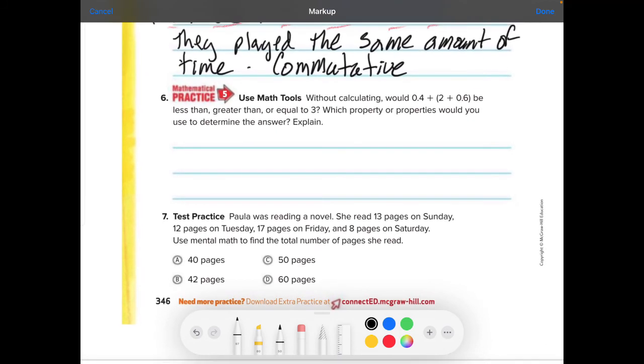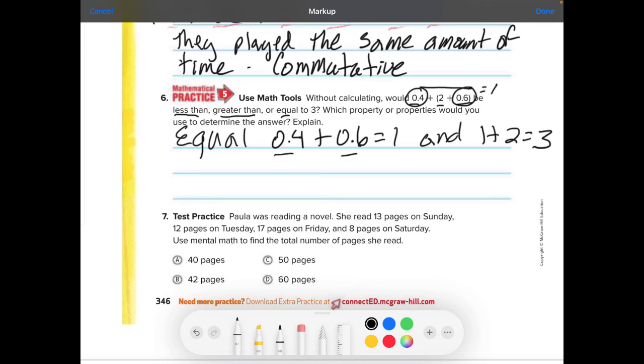Number six. Without calculating, would 0.4 plus 2 plus 0.6 be less than, greater than, or equal to 3? Looking at it, I can roughly add these two together. And I know that that will equal one. And one plus two would equal three. So I would say equal. And then explain. This is where you can use the commutative and associative properties of addition to allow you to add these together to equal the one and then add the two.